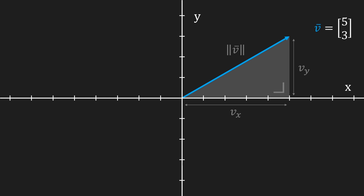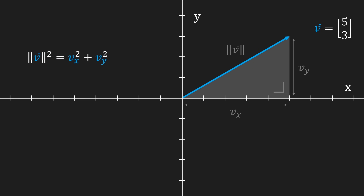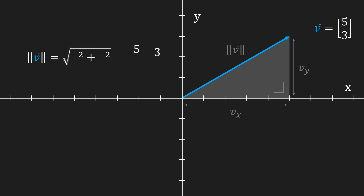And lucky for us there's been a famous mathematician called Pythagoras who came up with the Pythagorean theorem: a squared plus b squared equals c squared. Where a and b are the width and height of a right angle triangle and c is the length of its hypotenuse. We can now replace a, b and c with our vector's components and the vector's length. We'll swap the left and right side of that equation, take the square root of either side, and now we've got our expression for the length of a two-dimensional vector. If we fill in the components of that vector, we can calculate that this vector's length is equal to 5.83 and a bit.